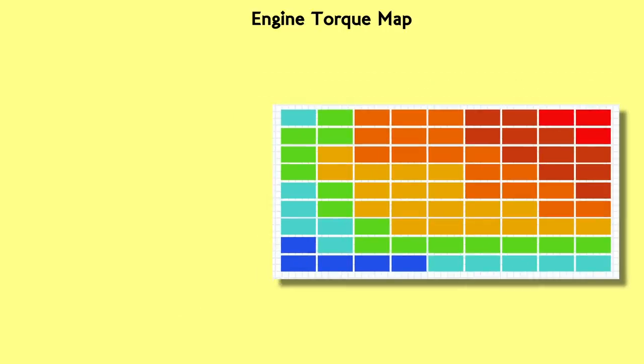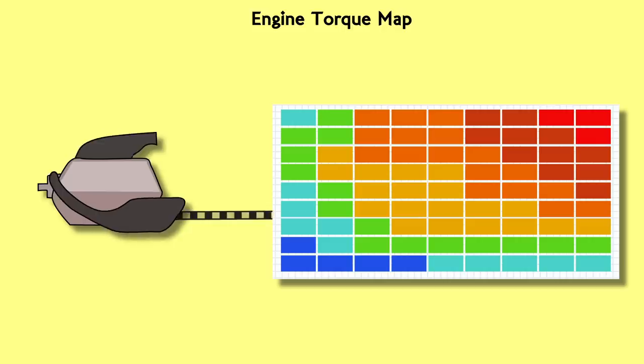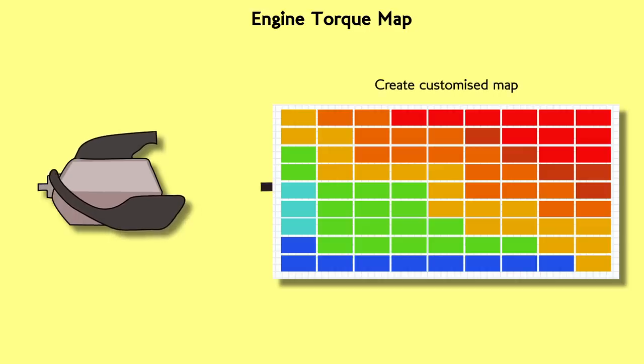So really this engine torque map just describes the engine as it normally behaves. We can gather this data by running the engine on a testing dyno and logging its torque levels under different scenarios. But what if we wanted to create a map that did make it behave differently to normal?